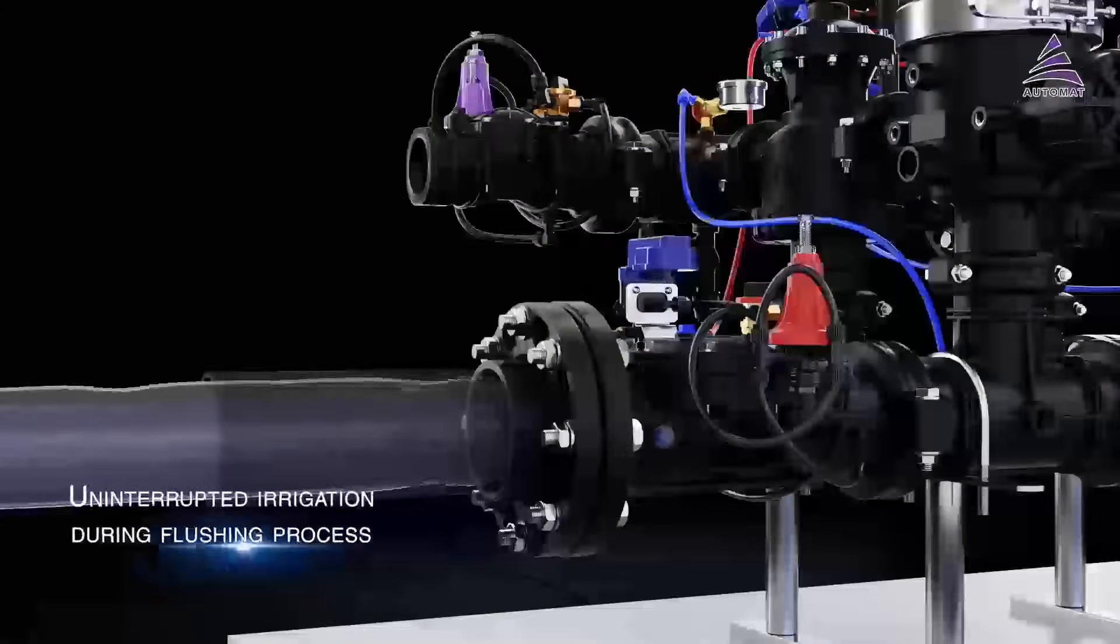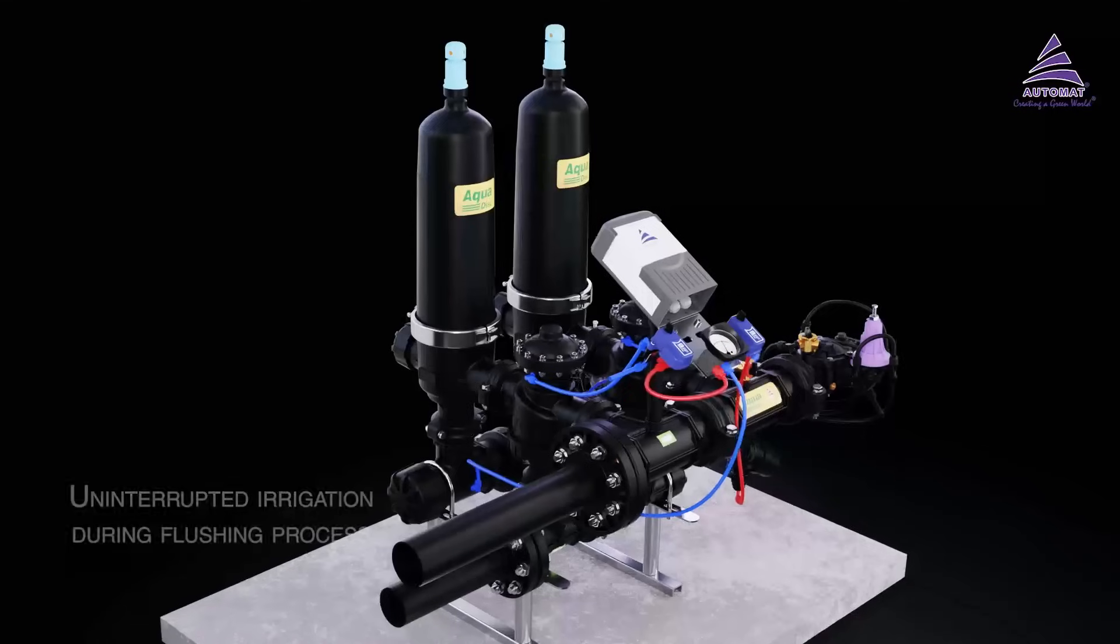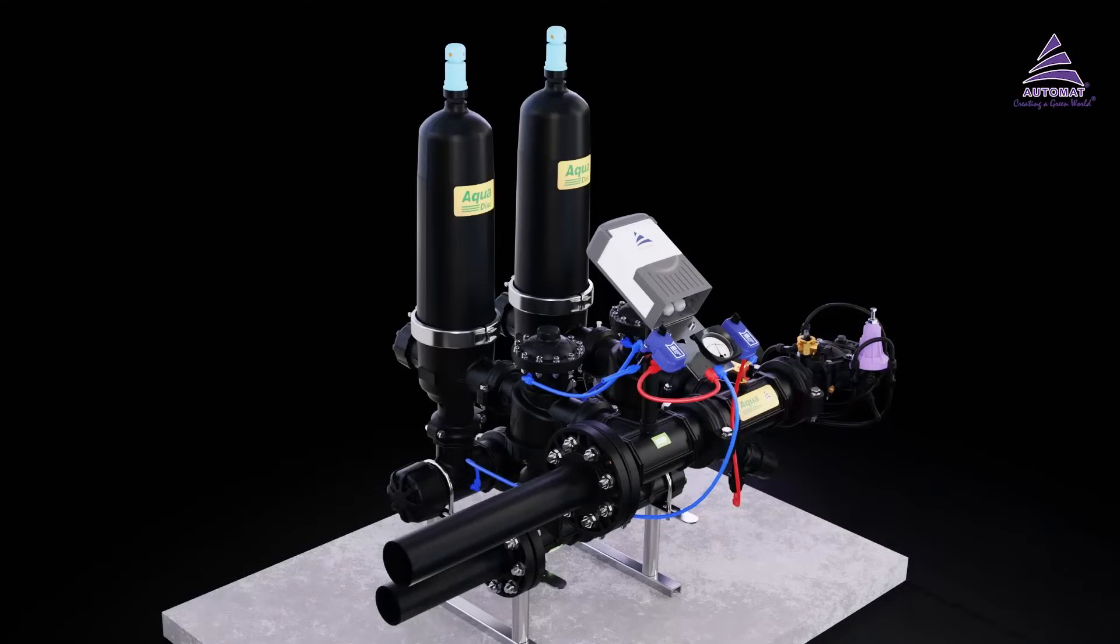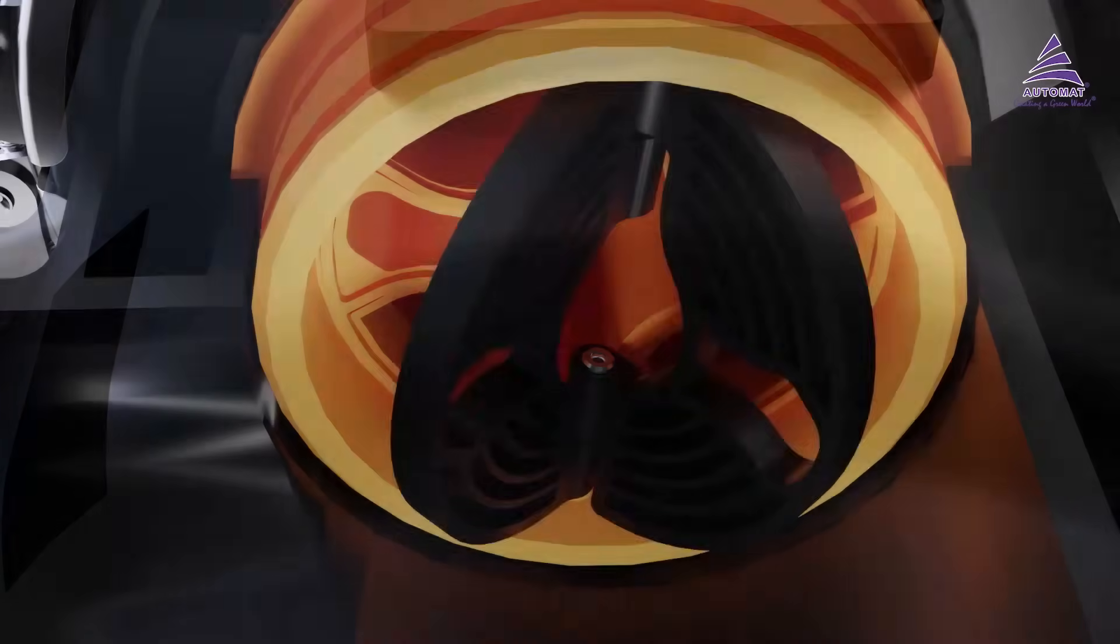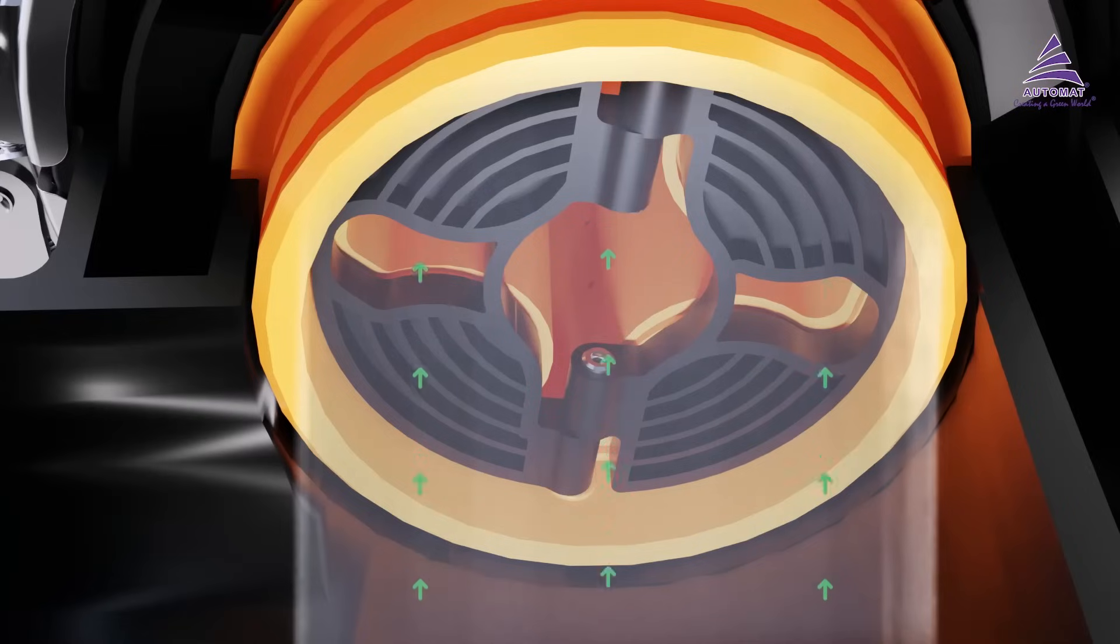During the backflushing mode, the check valve below the cartridge will close and only allow water to enter into the backflush fins, resulting in the best cleaning.